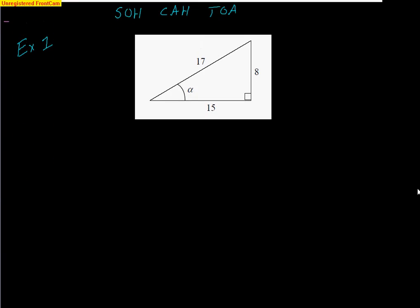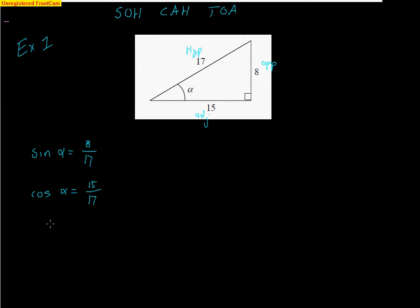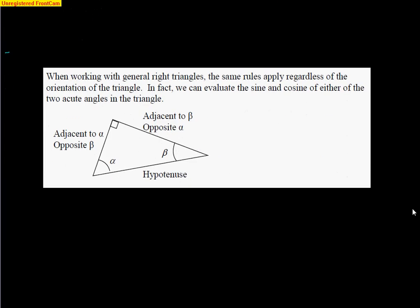Let's put this formula to work. Here is a situation: we have a right triangle with these sides. Here is our angle theta — 8 would be the opposite side, 15 would be the adjacent side, and 17 is clearly the hypotenuse across the 90-degree angle. So, sine of alpha is the opposite 8 over the hypotenuse 17. Cosine of alpha is the adjacent 15 over the hypotenuse 17. Tangent of alpha is the opposite 8 over the adjacent 15. If any fractions can be reduced, please do so, and if there are square roots in denominators, get rid of them.